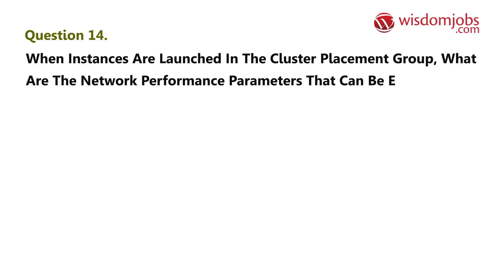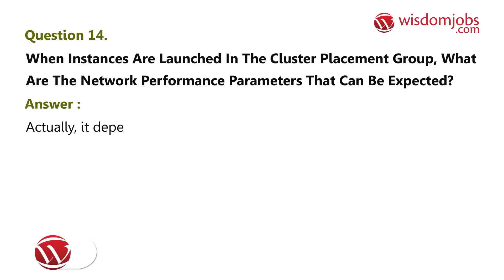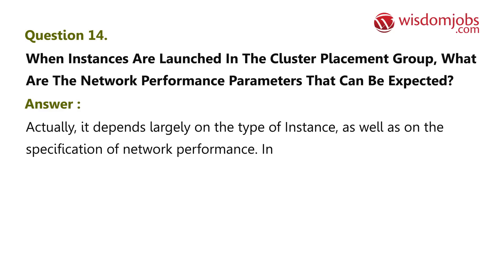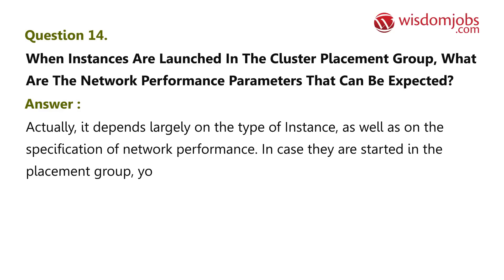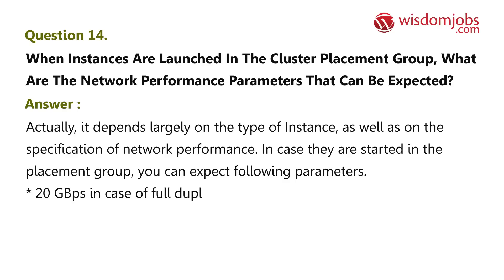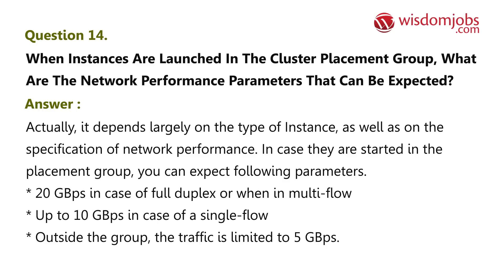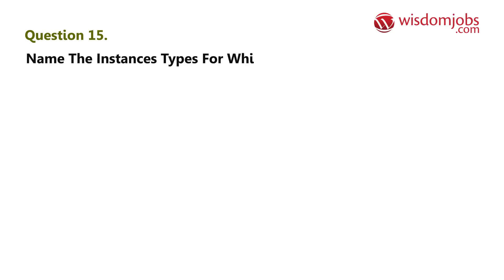Question 14: When instances are launched in a cluster placement group, what are the network performance parameters that can be expected? Answer: It depends largely on the type of instance and the network performance specification. If started in the placement group, you can expect up to 20 Gbps in case of full duplex or multi-flow, and up to 10 Gbps in case of a single flow. Outside the group, the traffic is limited to 5 Gbps.